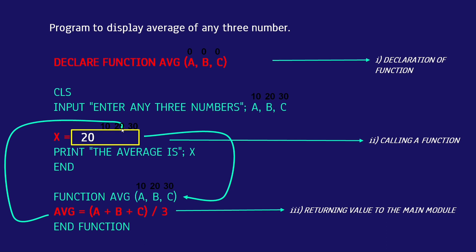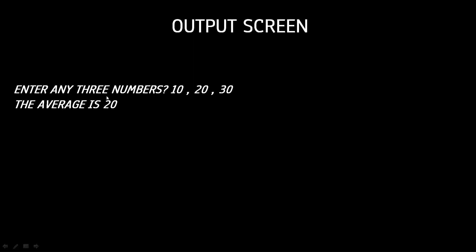The return value is 20 because the average of 10, 20, 30 is 20. The function returns this value and it comes back to that place in the main module. We store the returned value 20 in x. Now we print: PRINT "The average is"; x — so the value of x is 20 and the output will be 'The average is 20'. After this we write END, so program execution ends here.